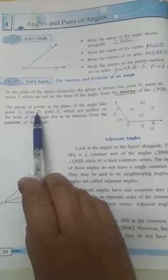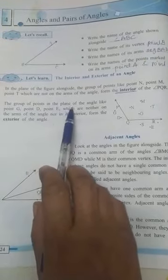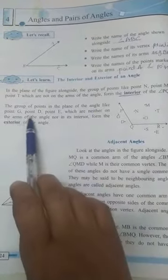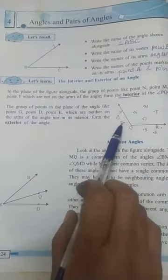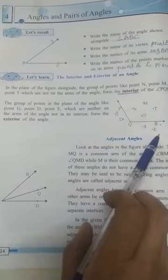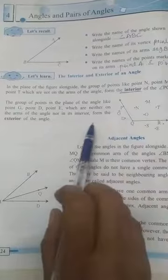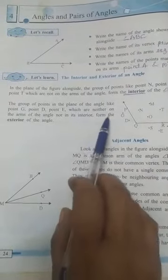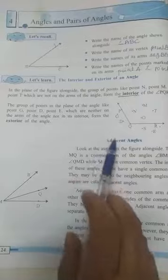The group of points in the plane of the angle like point G, point D, point S, point E are neither on the arm nor interior of the angle. They form the exterior of the angle.